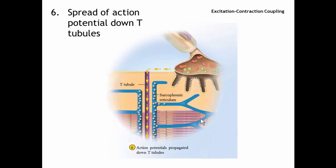Here in this picture, we can see the spreading of the action potential down the T-tubules. This is the cell membrane, or sarcolemma, of our muscle fiber. The T-tubules are just areas where the sarcolemma dips and goes into the fiber. The yellow arrow is indicating our action potential traveling across the sarcolemma, including the sarcolemma that is the T-tubule. So the action potential is traveling down the T-tubule.